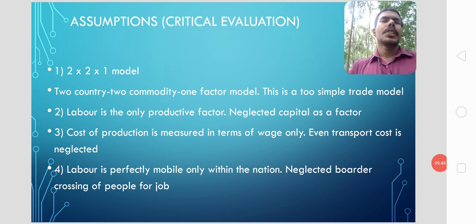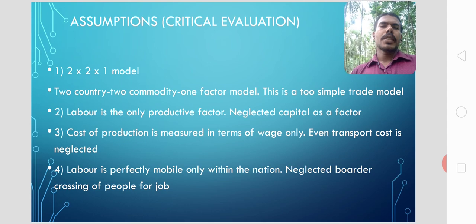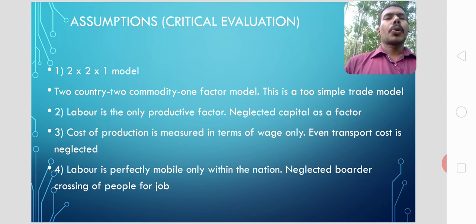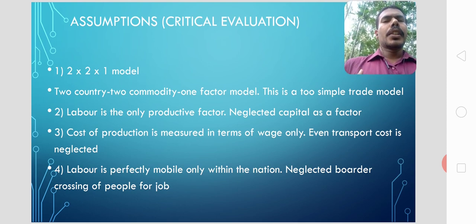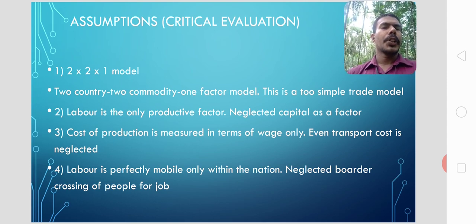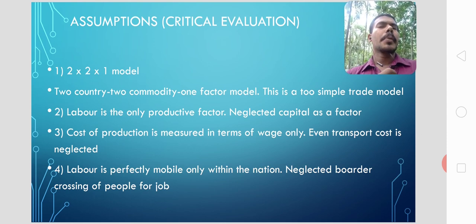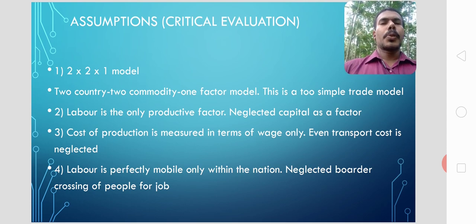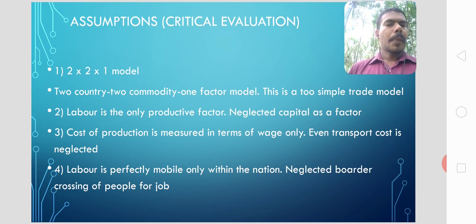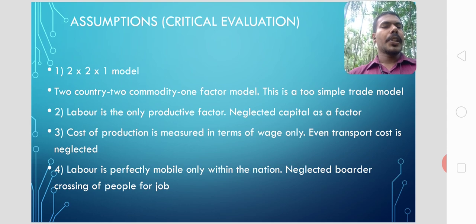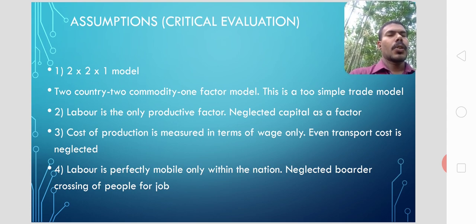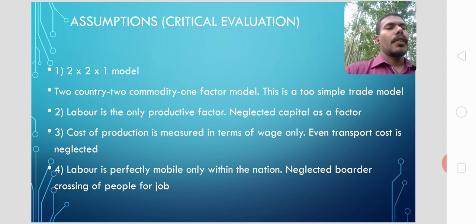There are certain assumptions on which the theory is based. The first is that it is a two-by-two-by-one model — two countries, two commodities, and one factor of production. This is a simple trade model with country A and country B producing only commodity X and commodity Y. Cost is measured in terms of labor only. The second assumption is that labor is the only productive factor; capital is neglected, so the cost of production is measured only in terms of labor, that is, in terms of wages.